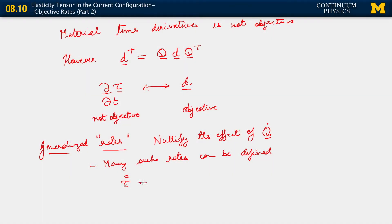It's just some sort of rate which has the right physical dimensions of a rate of τ. You can find many such objects, which will then allow you to write a relation of that form. Many rates can be defined to be used in relations of this type. But when we do that, what is left up to us to model is what that transformation tensor is.